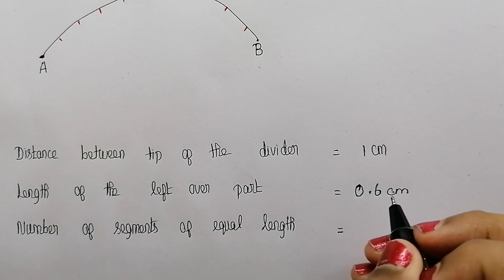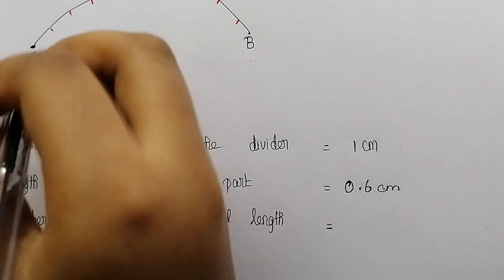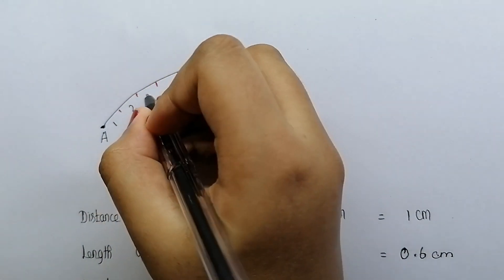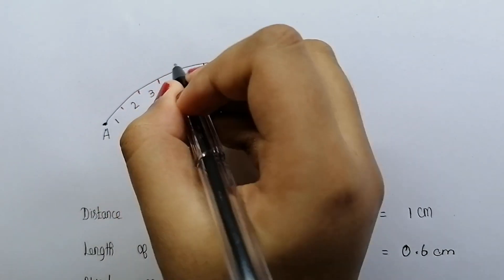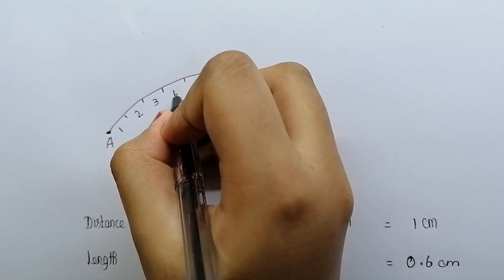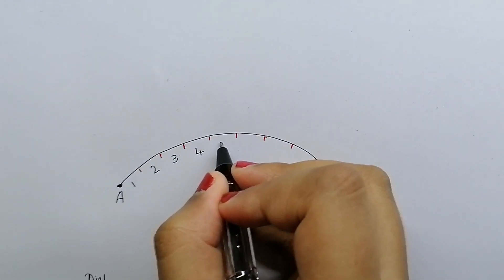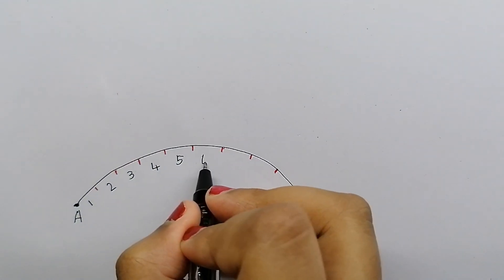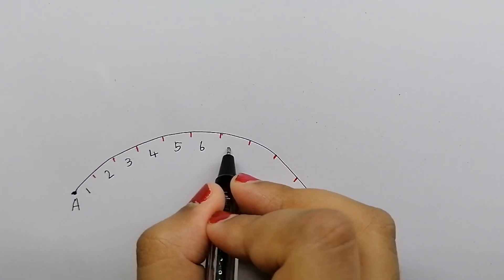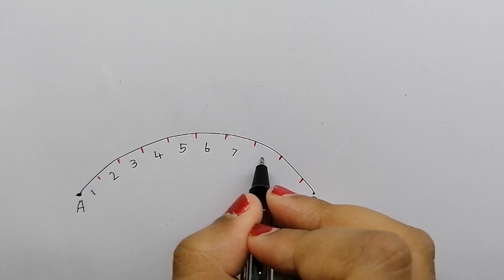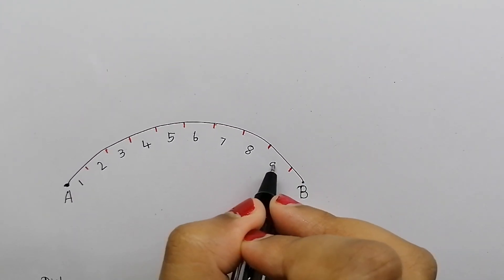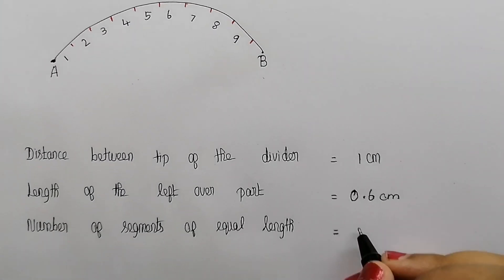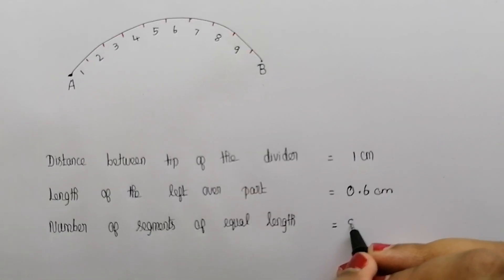Now count the number of segments of equal length. The number of segments of equal length is equal to 9.